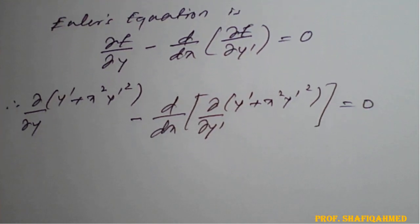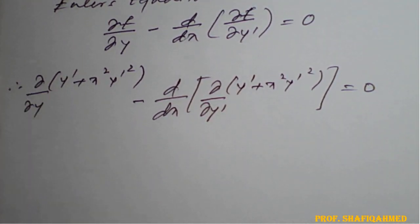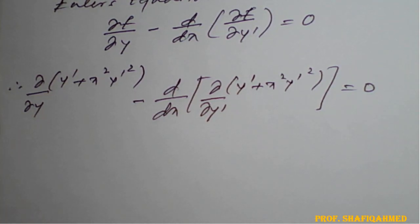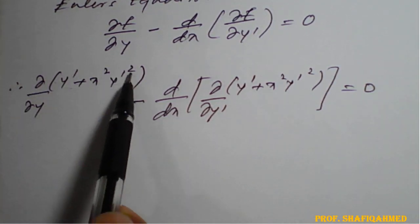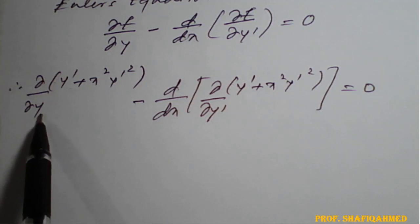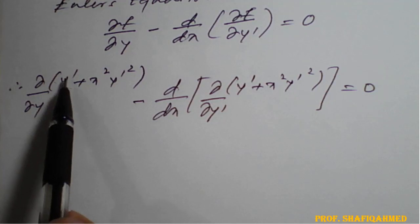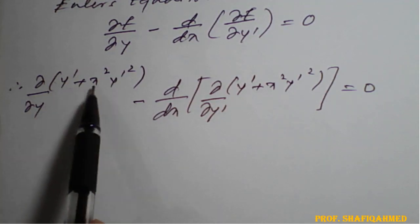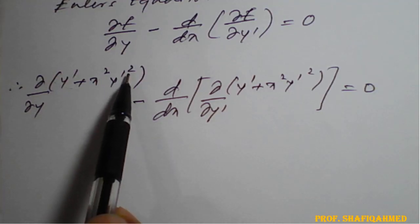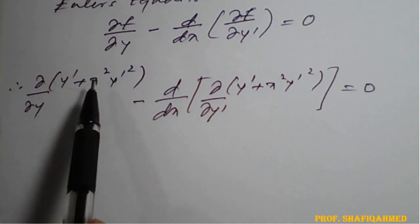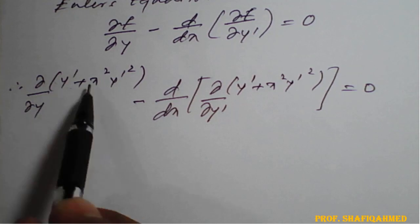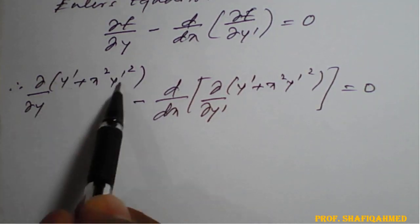Applying partial derivative with respect to y: since there is no explicit y term in f — only y' and x² y'² — all terms are treated as constant with respect to y. Therefore the partial derivative of f with respect to y is 0.